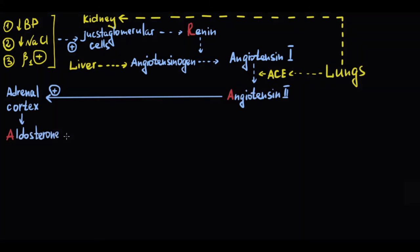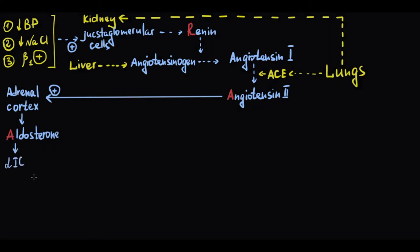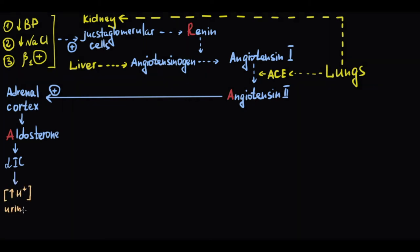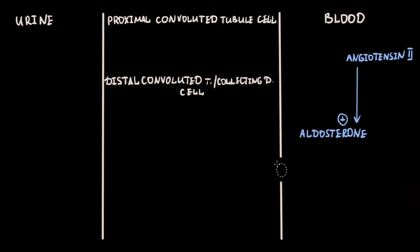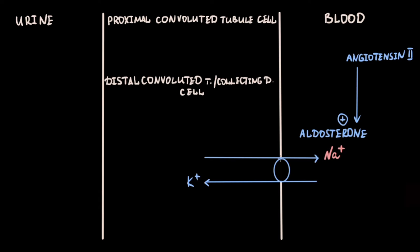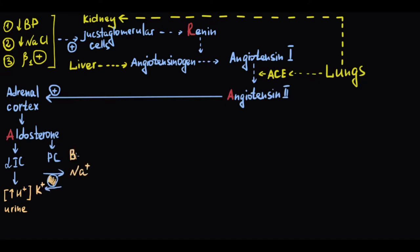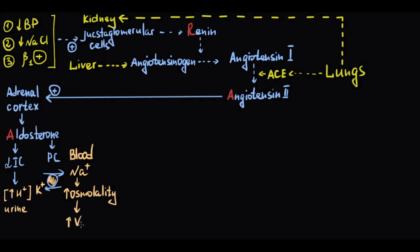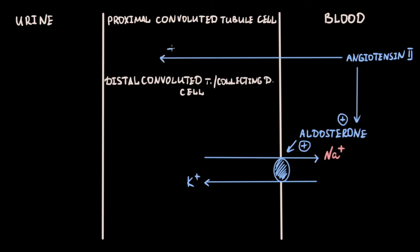Aldosterone acts in the collecting tubule of the nephron on two cell types. In alpha-intercalated cells, it increases the activity of hydrogen ATPase, leading to hydrogen ion secretion into the urine. In principal cells, it activates sodium-potassium ATPase, increasing sodium reabsorption into the blood and potassium secretion into the urine. In the proximal convoluted tubule, angiotensin-2 also increases sodium-hydrogen exchange, leading to increased sodium reabsorption.